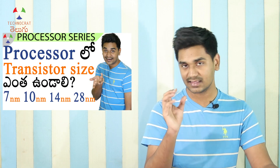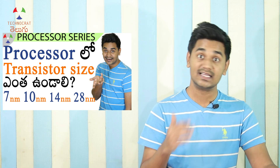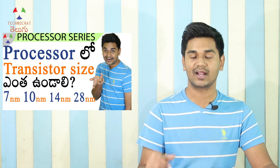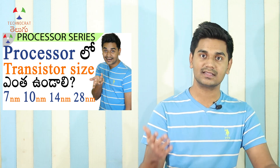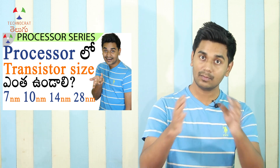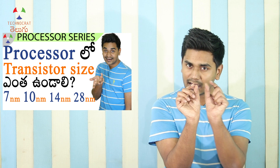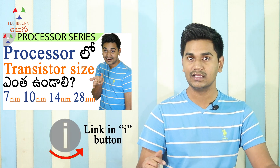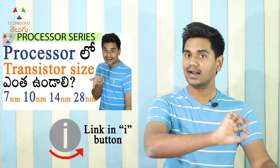Another important specification is the feature size, which refers to the manufacturing process. Common sizes are 7nm, 10nm, 14nm, 22nm, and 28nm. A smaller feature size means transistors are smaller. When the processor size is smaller, we can fit more transistors on a chip, enabling better communication between components. A smaller process node offers significant performance and efficiency advantages.